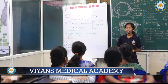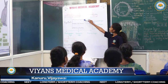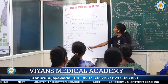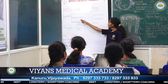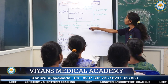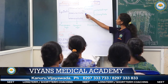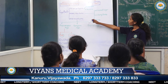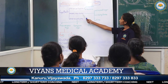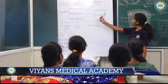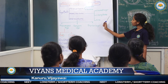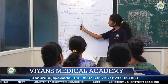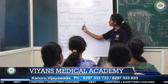Coming to the eyeball, it is divided into mainly three parts: fibrous tunic, vascular tunic, and nervous tunic. Fibrous tunic is divided into two parts: cornea and sclera. Vascular tunic is divided into three parts: choroid layer, ciliary body, and iris. The nervous tunic is also known as retina.